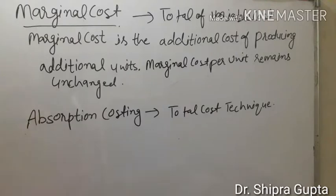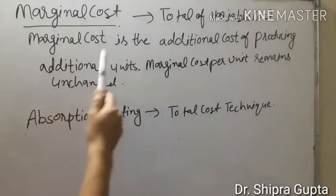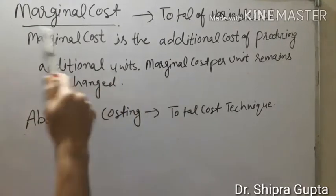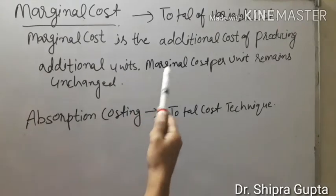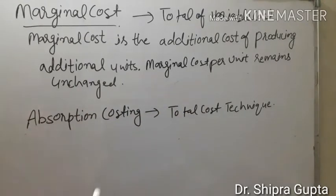Marginal cost is a total of variable cost. In marginal cost, it is the additional cost of producing additional units. Marginal cost per unit remains unchanged. We include only variable cost in marginal cost, and if we produce any extra unit, its value is equal to marginal cost or variable cost.